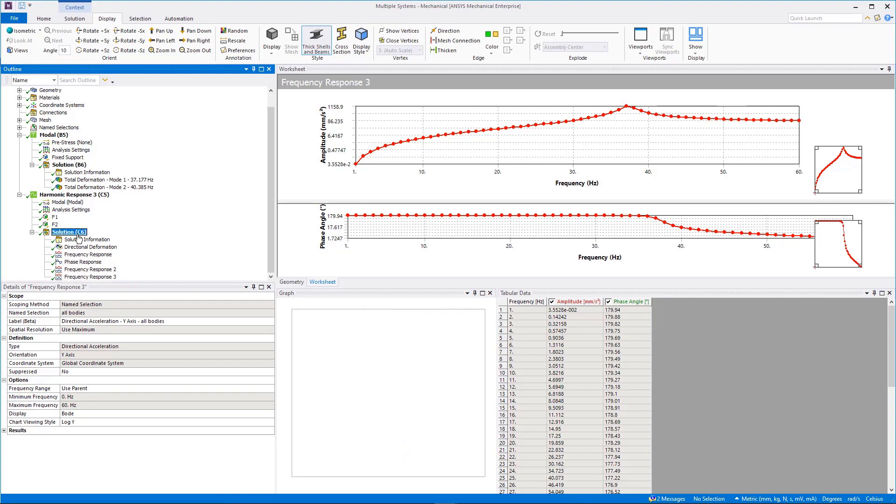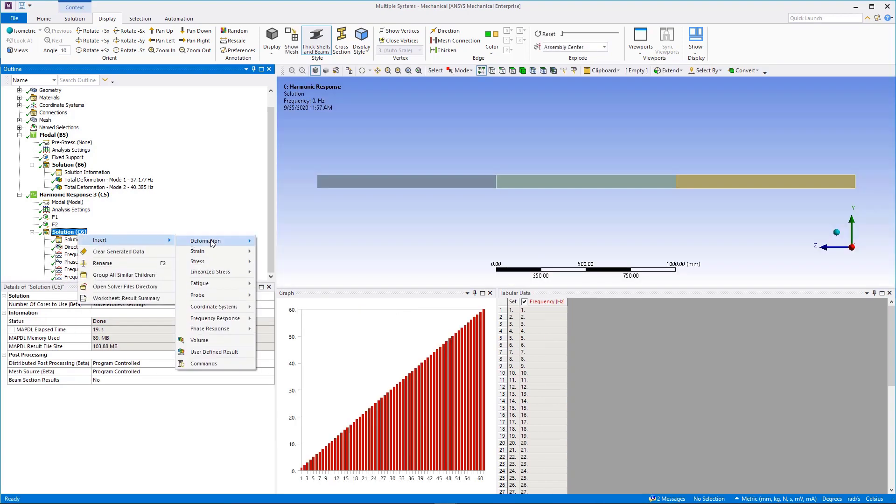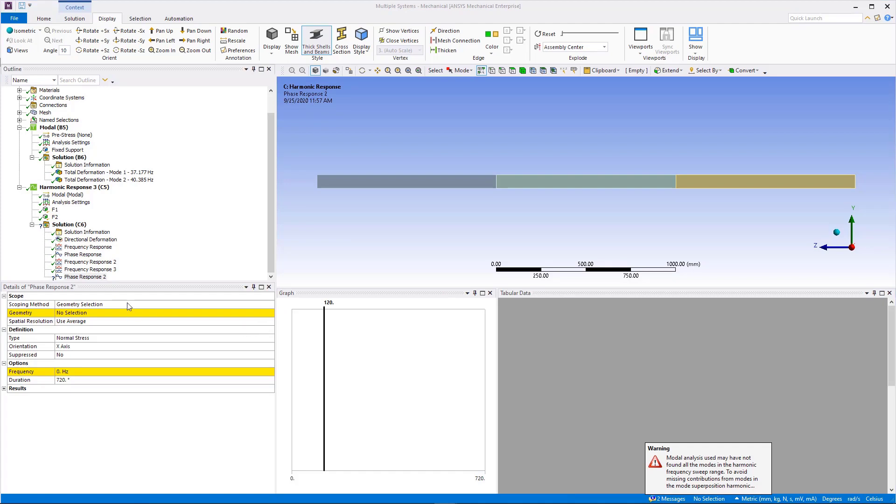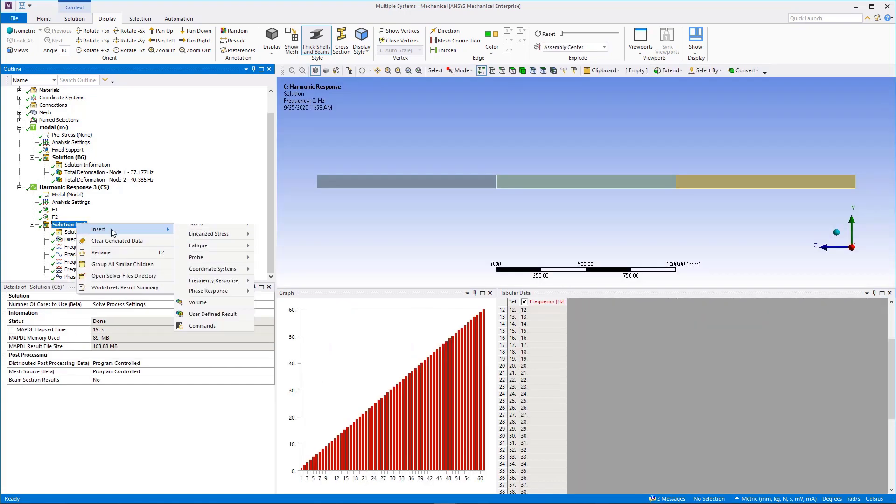By careful examination of the components of stress versus phase angle, we can see that the XY component of stress dominates all the others. We can also see that it is maximum at 79.2 degrees phase angle. Once we have established the frequency and phase angle of greatest interest, we can focus our attention on critical derived quantities like equivalent stress.